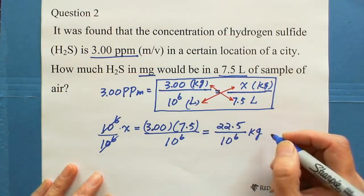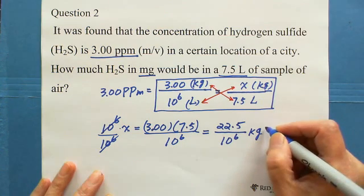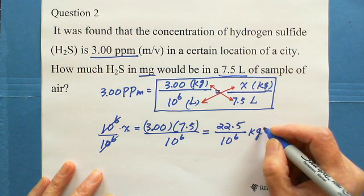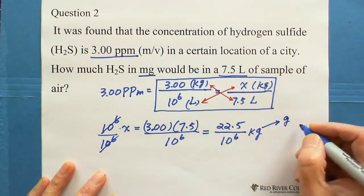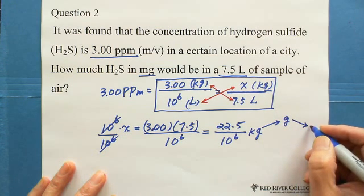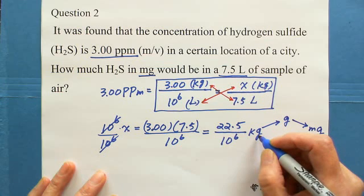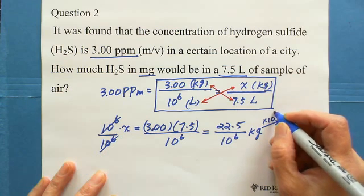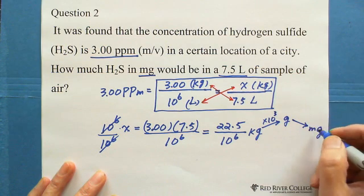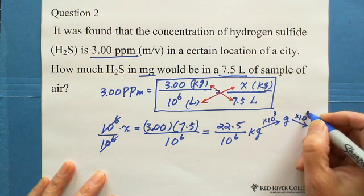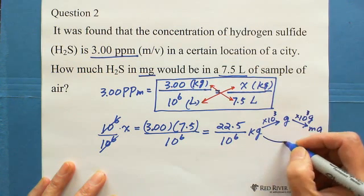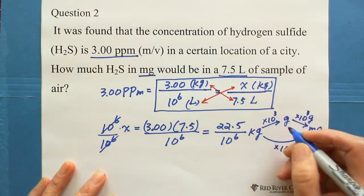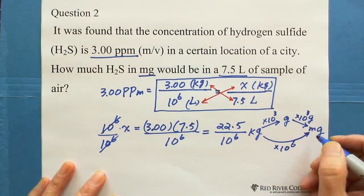To convert kilograms to milligrams: from kilograms to grams, multiply by 10 to the 3; from grams to milligrams, multiply by another 10 to the 3. So total, from kilograms to milligrams, you multiply by 10 to the 6.